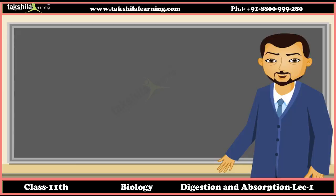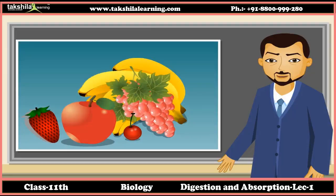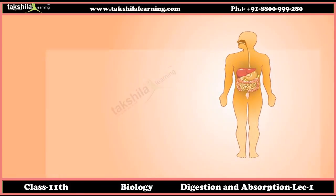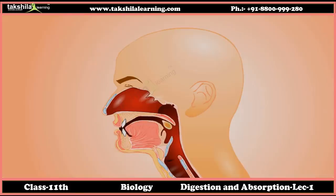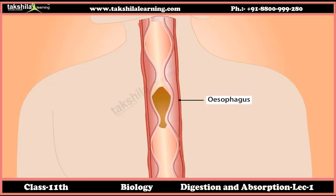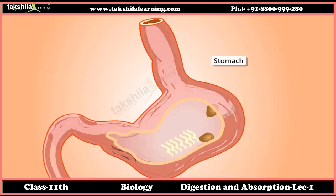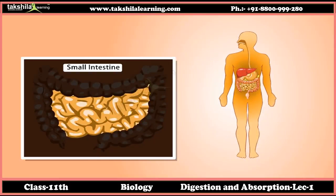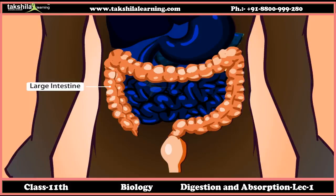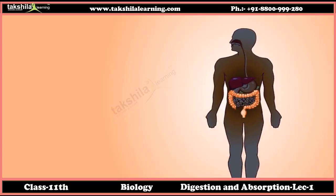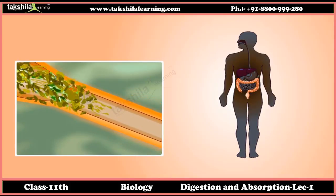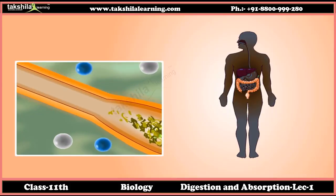Hey kids, we all know that we need energy to live and food is the primary source of energy. The process of digestion of food starts from the mouth, and absorption of energy majorly starts in the small intestine. Through the mouth and esophagus, food goes to the stomach where digestion of protein starts, then food enters the small intestine. Undigested food goes to the large intestine and is ejected from the body through the anus. Throughout this module, we will learn about digestion and absorption.